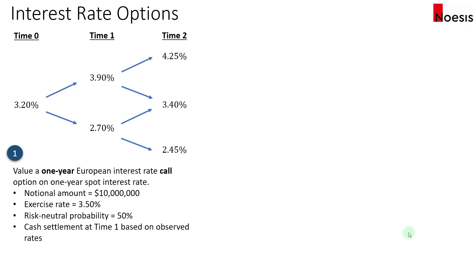In this video, I am going to run through four examples on valuing interest rate options using the binomial option valuation model. For example one, we will value a one-year European-style interest rate call option. In example two, a one-year European interest rate put option. In example three, a two-year European interest rate call option, and in example four, a two-year European interest rate put option. We will use a two-period binomial interest rate tree with a risk-neutral probability of 50% for each node.